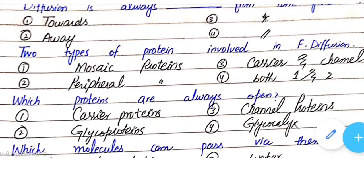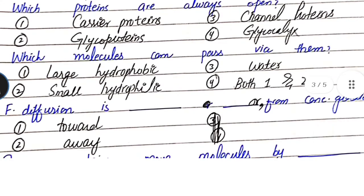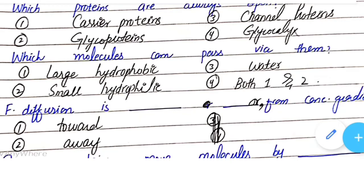Basically, the two types of proteins involved in facilitated diffusion are carrier and channel proteins, so option three is correct. Which proteins are always open? Option one - carrier proteins, option two - glycoproteins, option three - channel proteins, option four - glycocalyx proteins. Channel proteins are always open, so option three is correct.